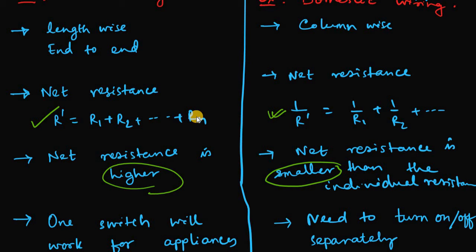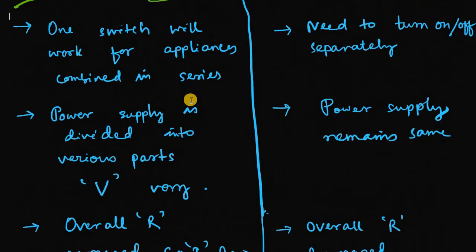When we need higher R we will combine it with series combination and where we need a less resistance then we will combine the appliances or resistors in parallel combination.